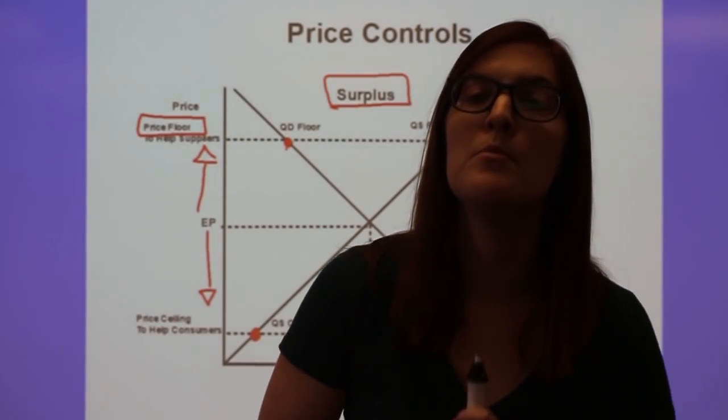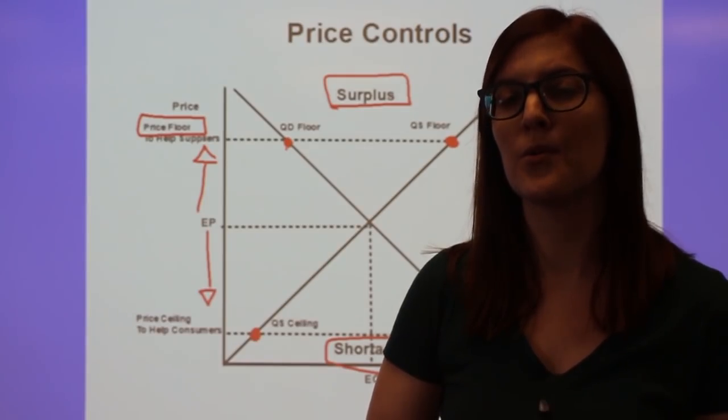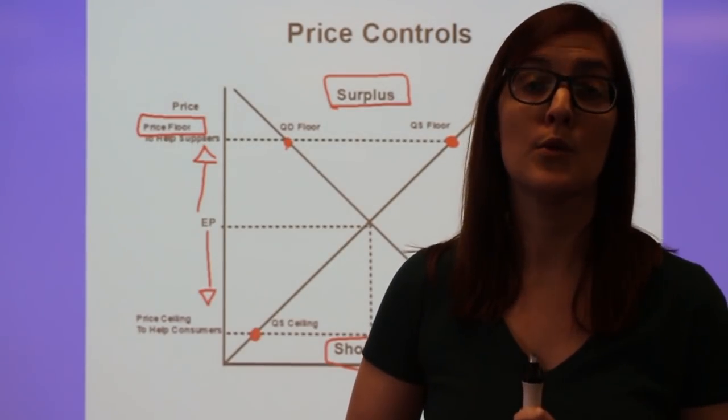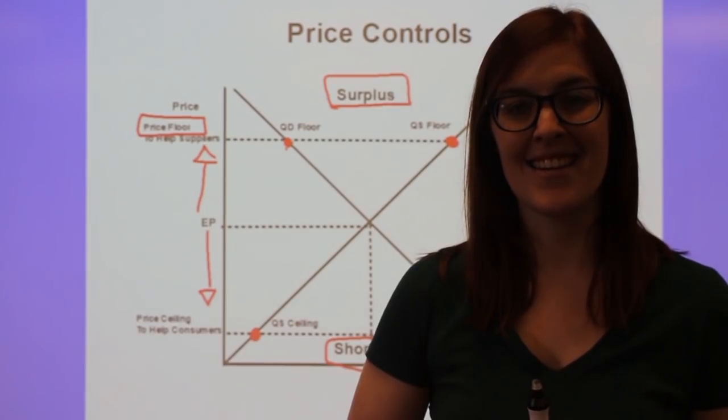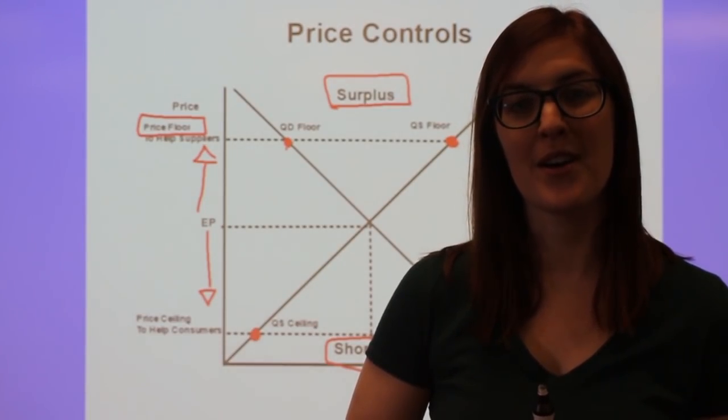So these are seen as inefficient because they move the economy off of equilibrium and create those disequilibriums of shortages and surplus. And that is the end of the Unit 1 AP Macroeconomics Review.